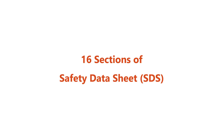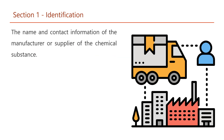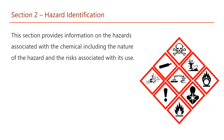Section 1 – Identification: This section provides the name and contact information of the manufacturer or supplier of the chemical substance. Section 2 – Hazards Identification: This section provides information on the hazards associated with the chemical, including the nature of the hazard and the risks associated with its use.